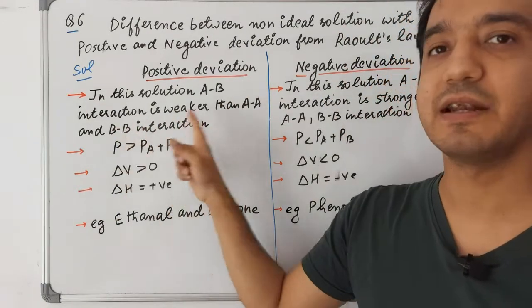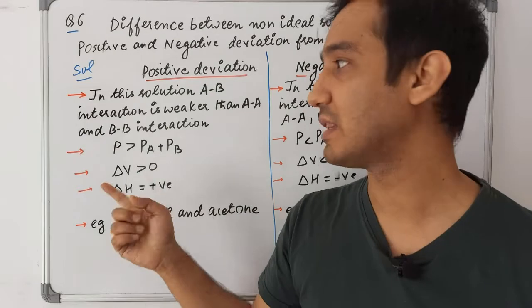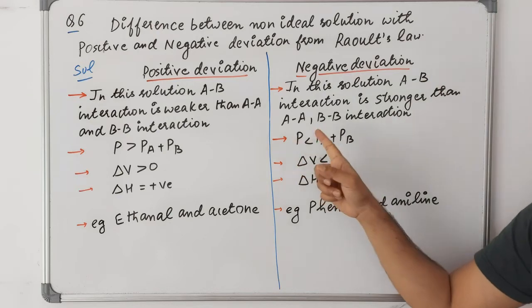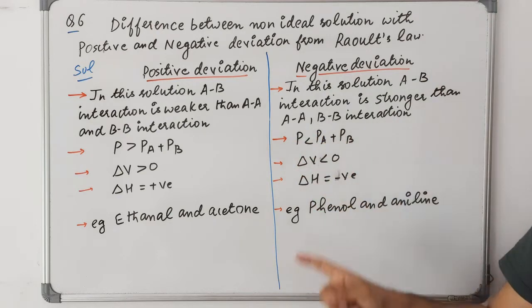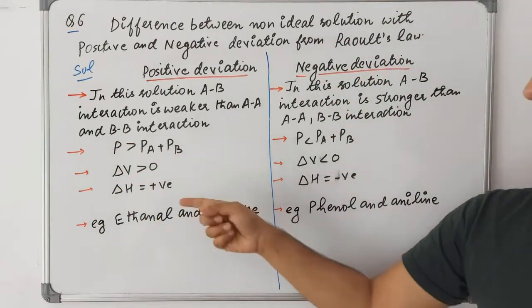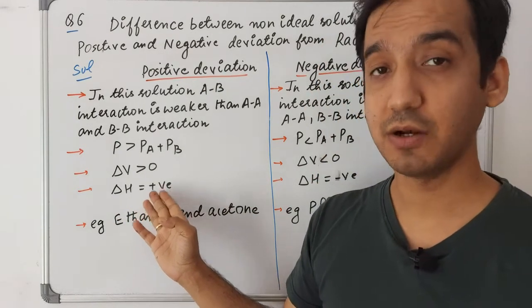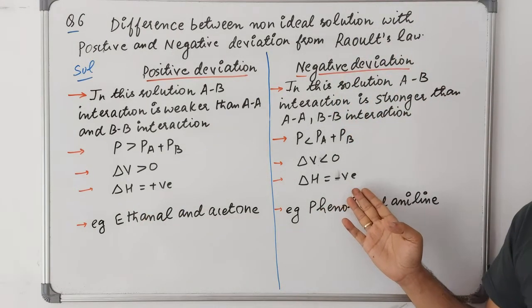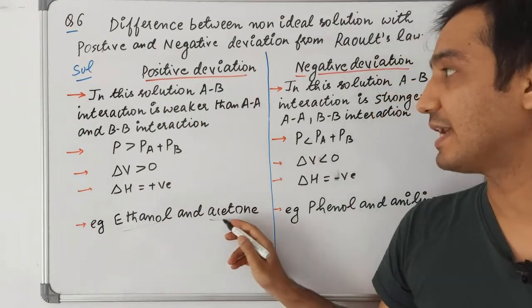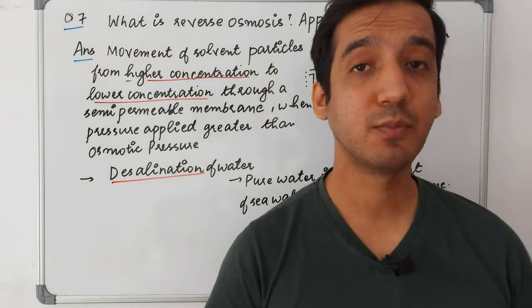For positive deviation, total pressure is greater than the pressure of the individual components, volume increases after mixing, and heat is absorbed (endothermic process). For negative deviation, total pressure is less than the individual components' pressure, volume decreases after mixing, and heat is released (exothermic). Example of positive deviation: ethanol and acetone. Example of negative deviation: phenol and aniline.